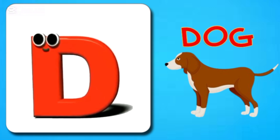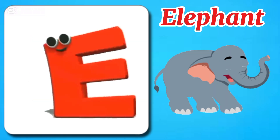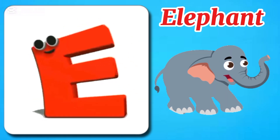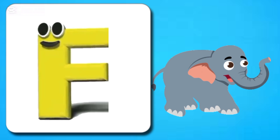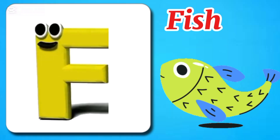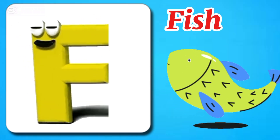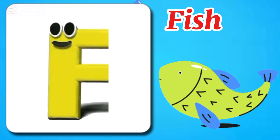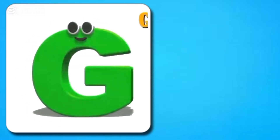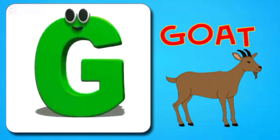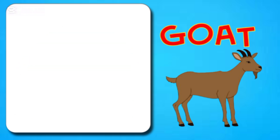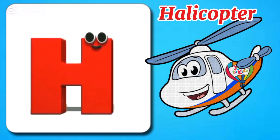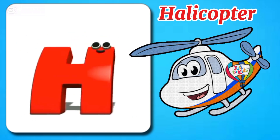Da-dog. E is for elephant, a-la-la-la-la-phant. F is for fish, fish, fish. G is for goat, goat, goat. H is for hat, helicopter.